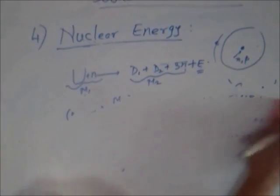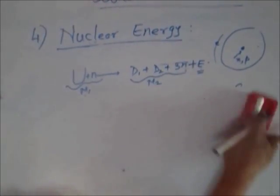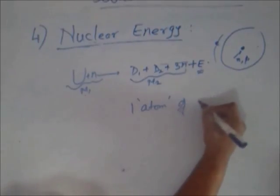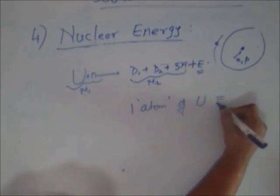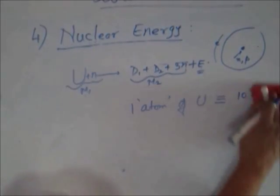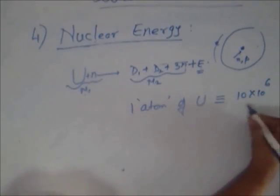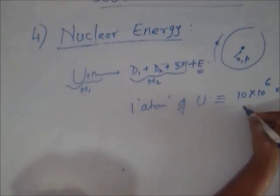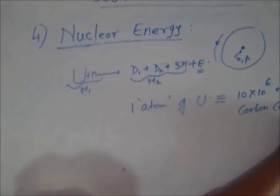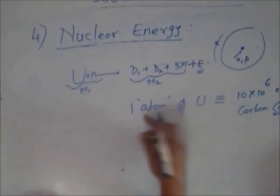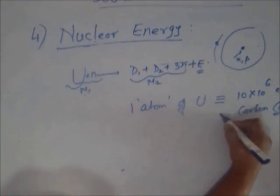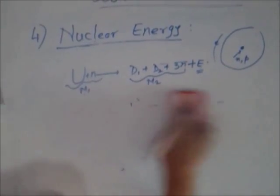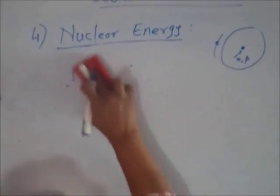It can be gauged that one atom of uranium - meaning all the nuclei of one uranium atom - would produce more than 10 million times the energy produced by one atom of carbon from coal. So if you compare one gram of coal with one gram of uranium, the nuclear source provides enormously more energy than the chemical source.